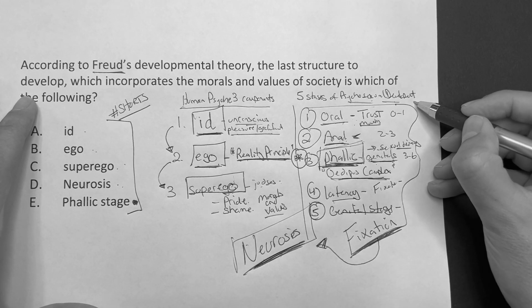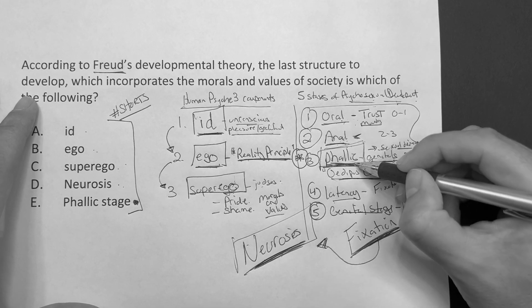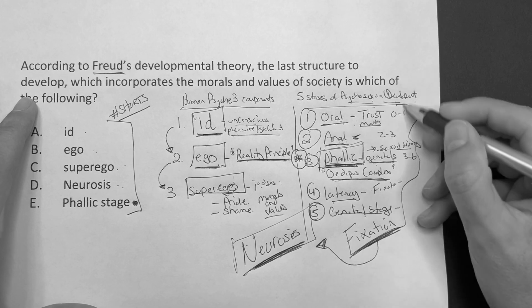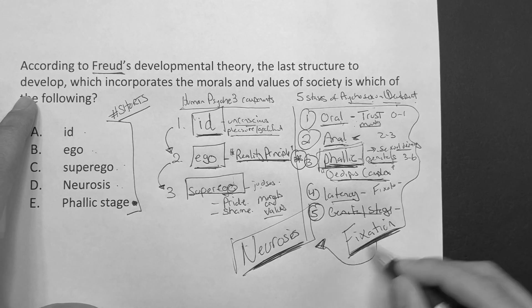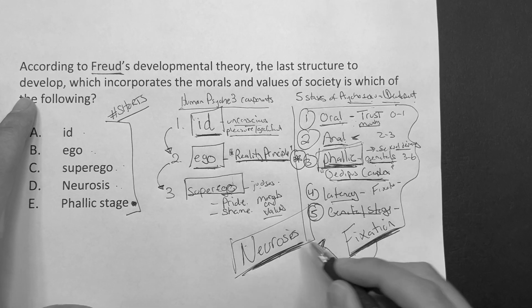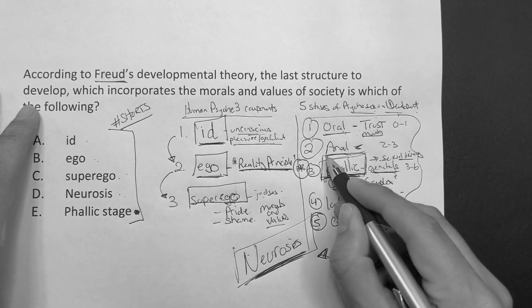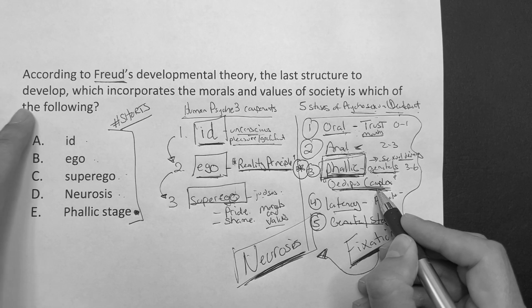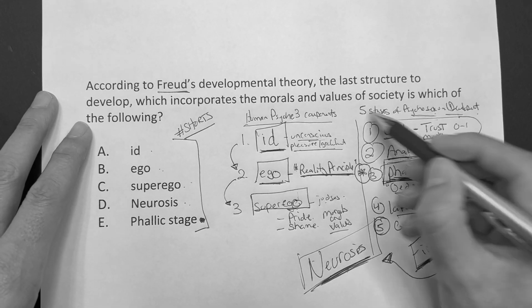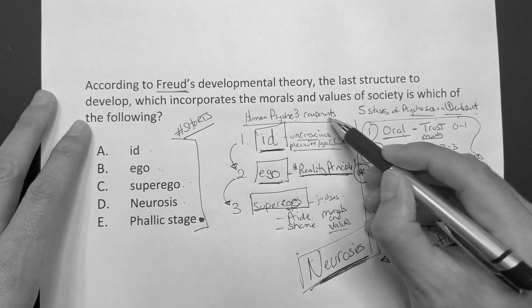All right. So you have the five stages of psychosexual development, oral, anal, phallic, latency, genital. You can be stuck in these stages, which you are fixated, which could lead to neuroses. The one I want you to know is the phallic stage because this is the one associated with the Oedipus complex. But you had to go back and say, well, Freud said there's three components to the human psyche.